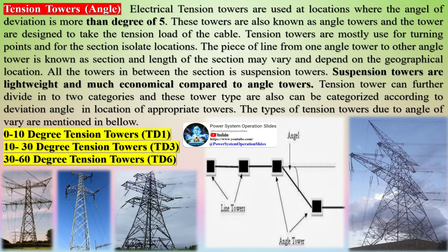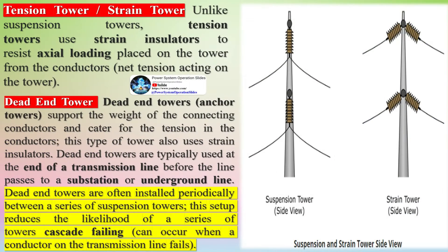Dead-end towers, also called anchor towers, support the weight of the connecting conductors and cater for the tension in the conductors. This type of tower also uses strain insulators. Dead-end towers are typically used at the end of a transmission line before the line passes to a substation or underground line.